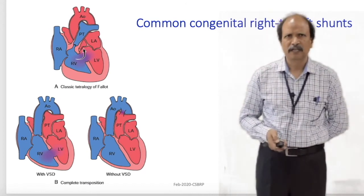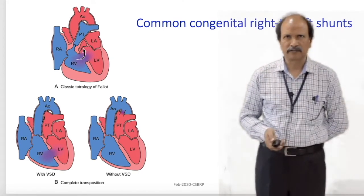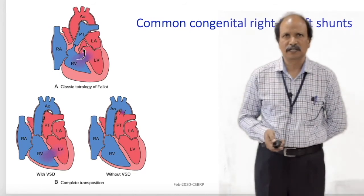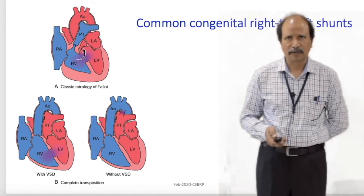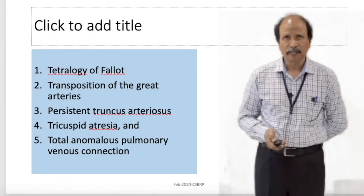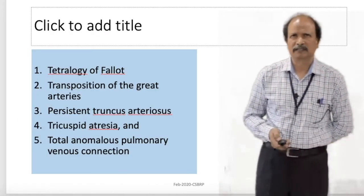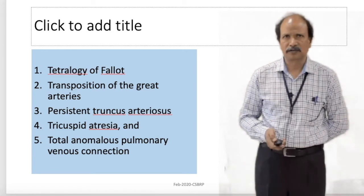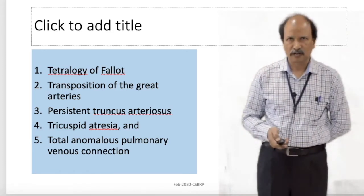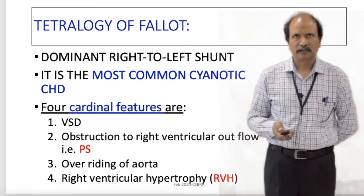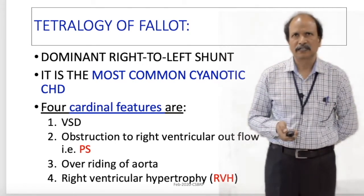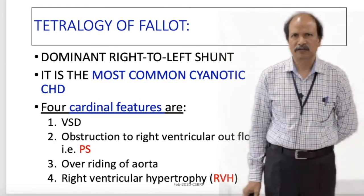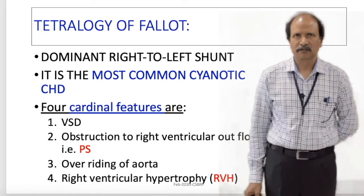Clinical examples for congenital heart diseases associated with right to left shunt include tetralogy of Fallot, which is very common, and complete transposition of great vessels — which may be compatible with life only when there is a shunt like VSD or patent ductus arteriosus. Other examples include tetralogy of Fallot, transposition of great vessels, persistent truncus arteriosus, tricuspid atresia, and total anomalous pulmonary venous return. Tetralogy of Fallot is the most common cyanotic congenital heart disease seen in practice.